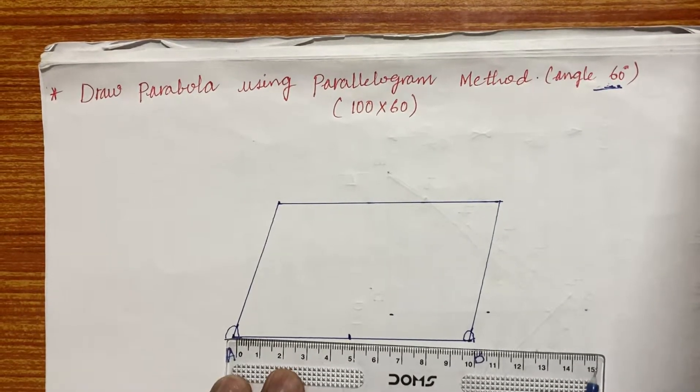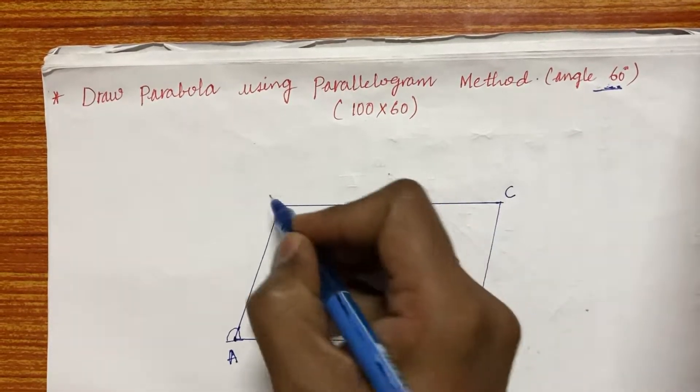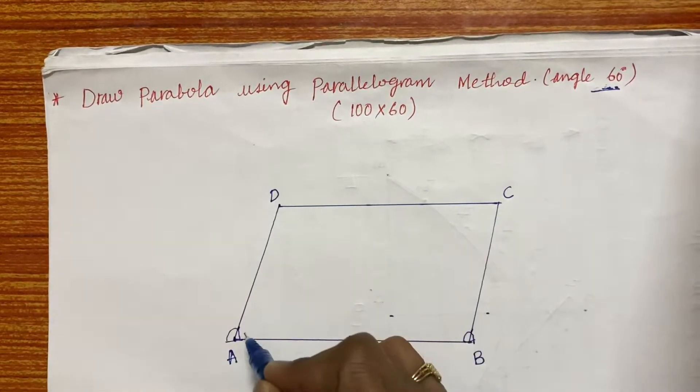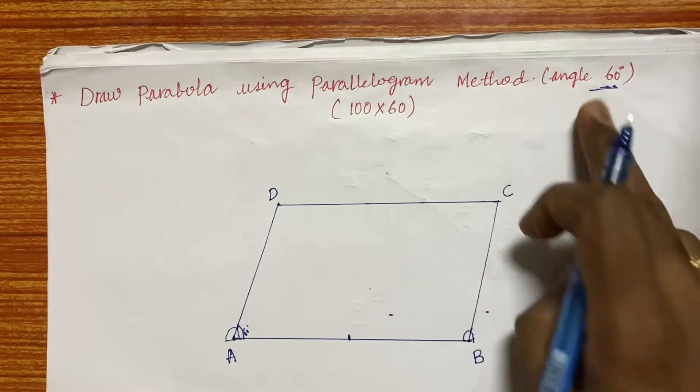Later, divide this. I mean this is A, B and C, D is a parallelogram and the angle here is 60 degree. It is given here.